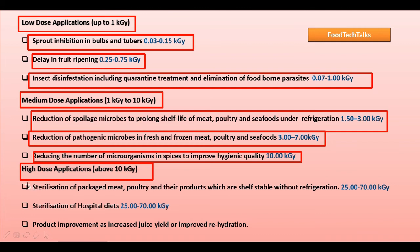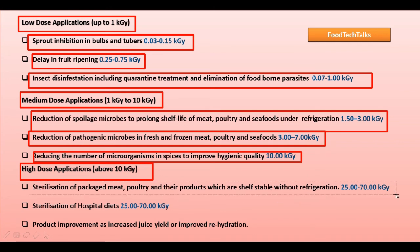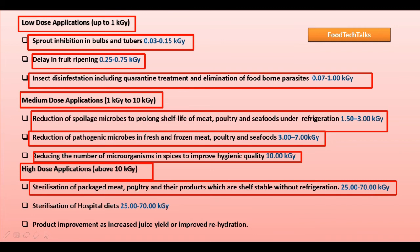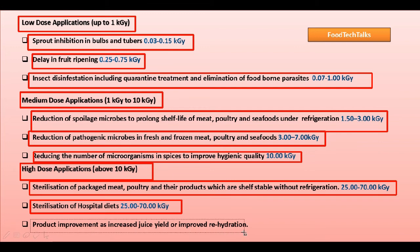High dose applications, above 10 kilogray, include: sterilization of packaged meat, poultry, and their products which are shelf-stable without refrigeration at 25 to 70 kilogray; sterilization of hospital diets at 25 to 70 kilogray; and product improvement such as increased juice yield or improved rehydration.